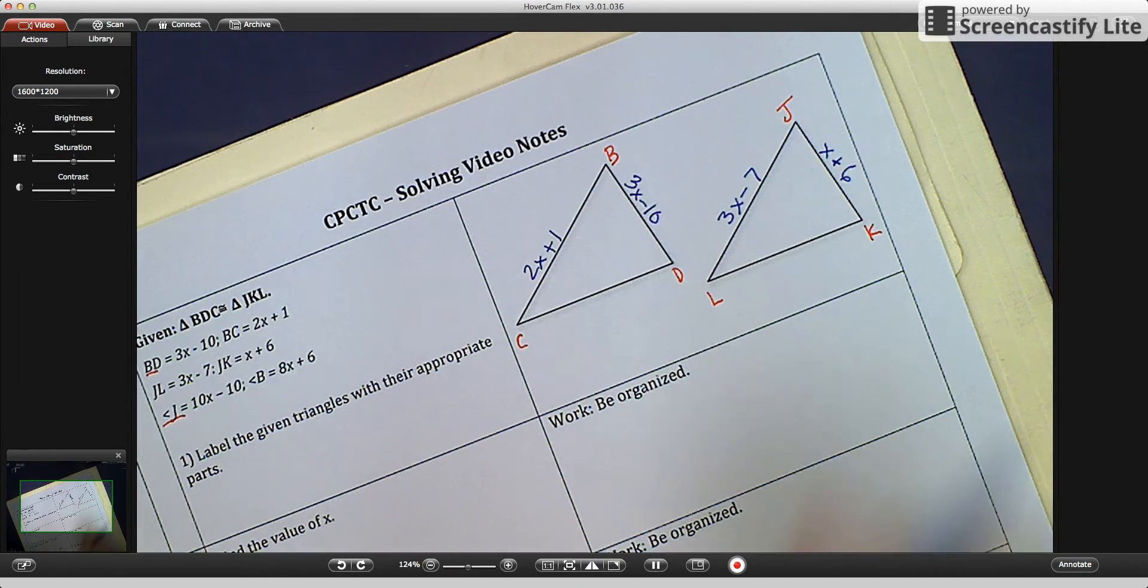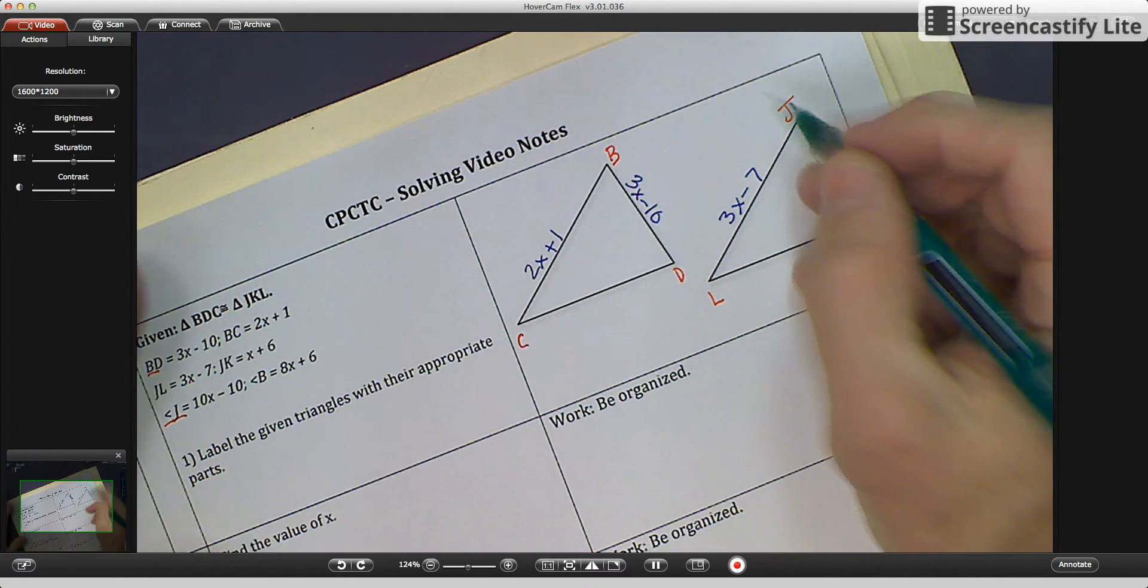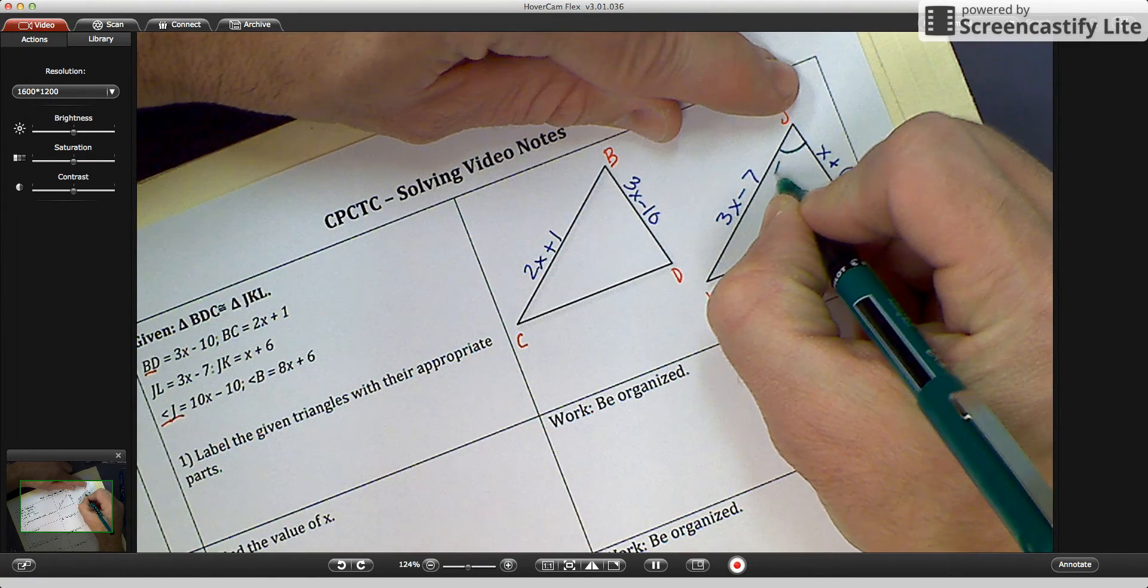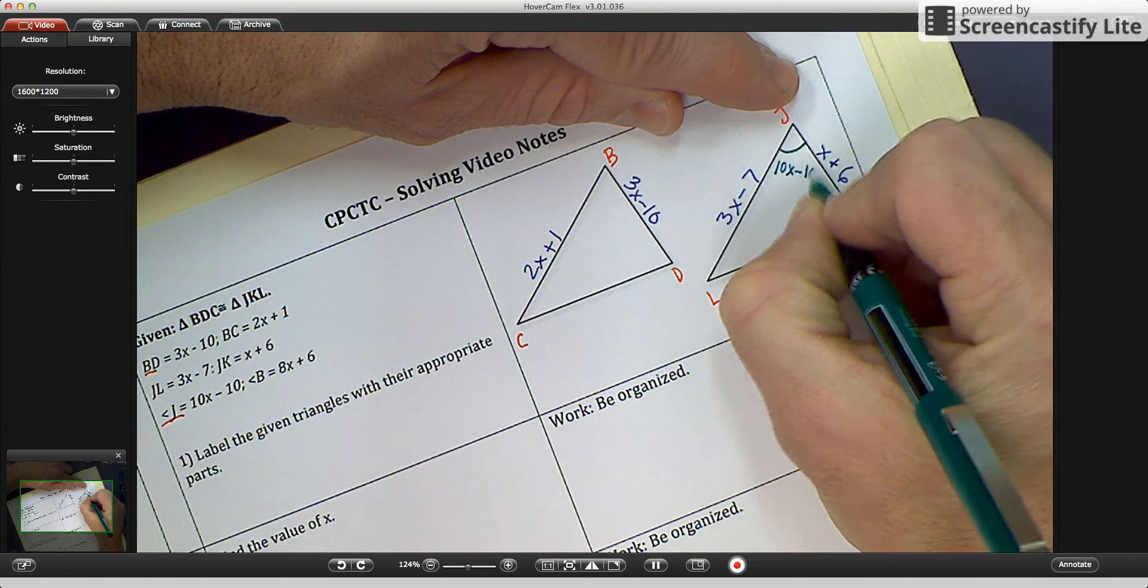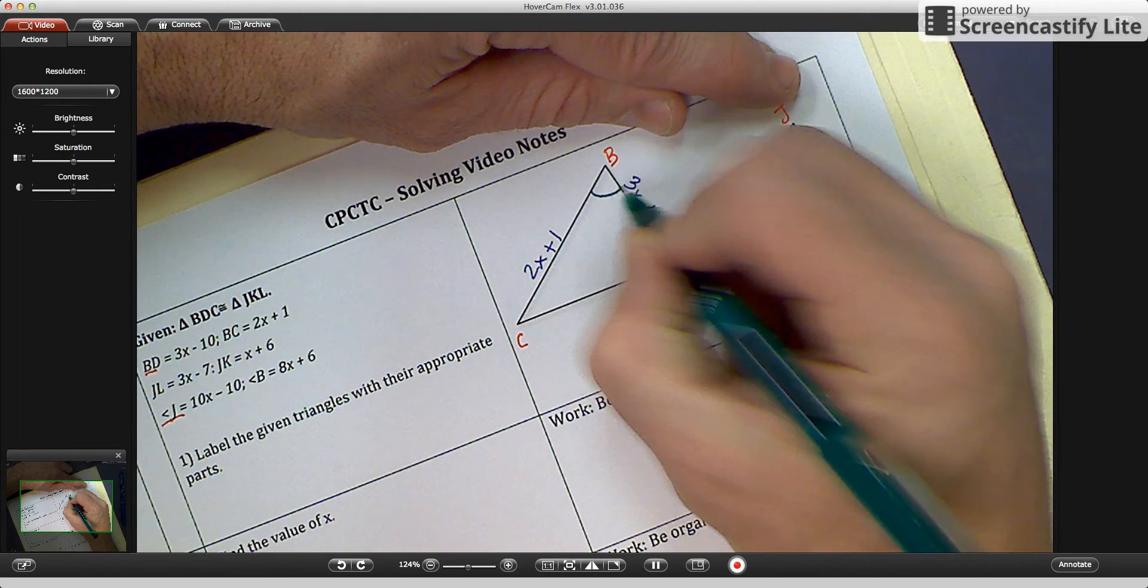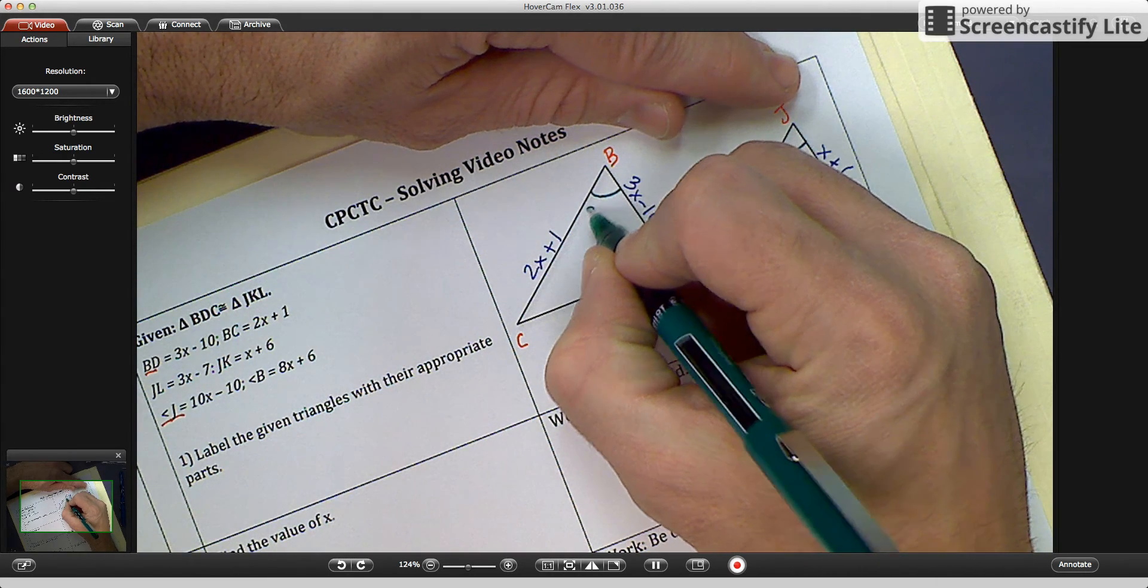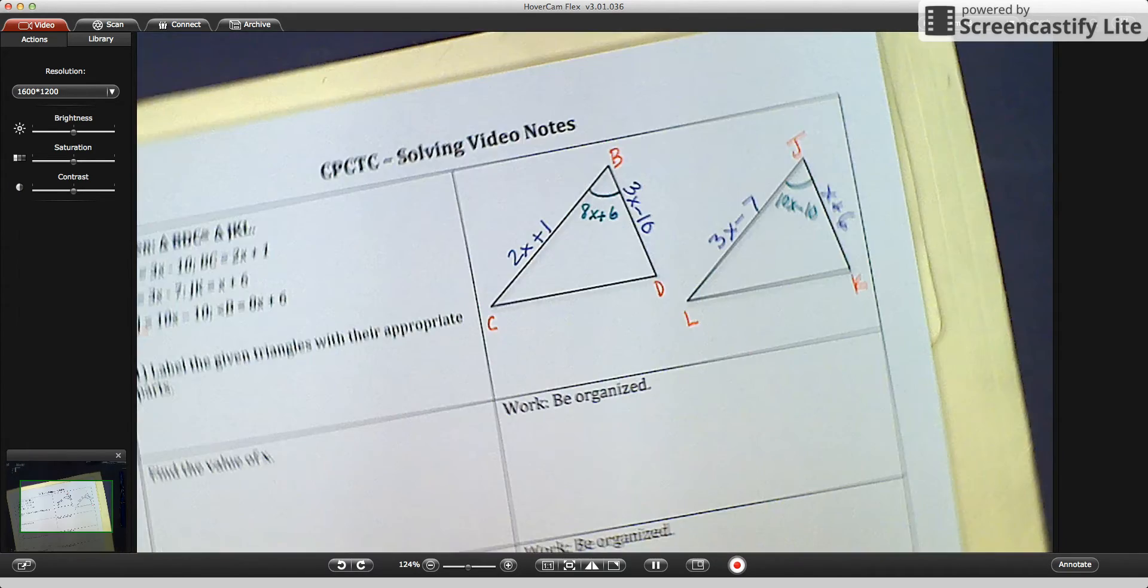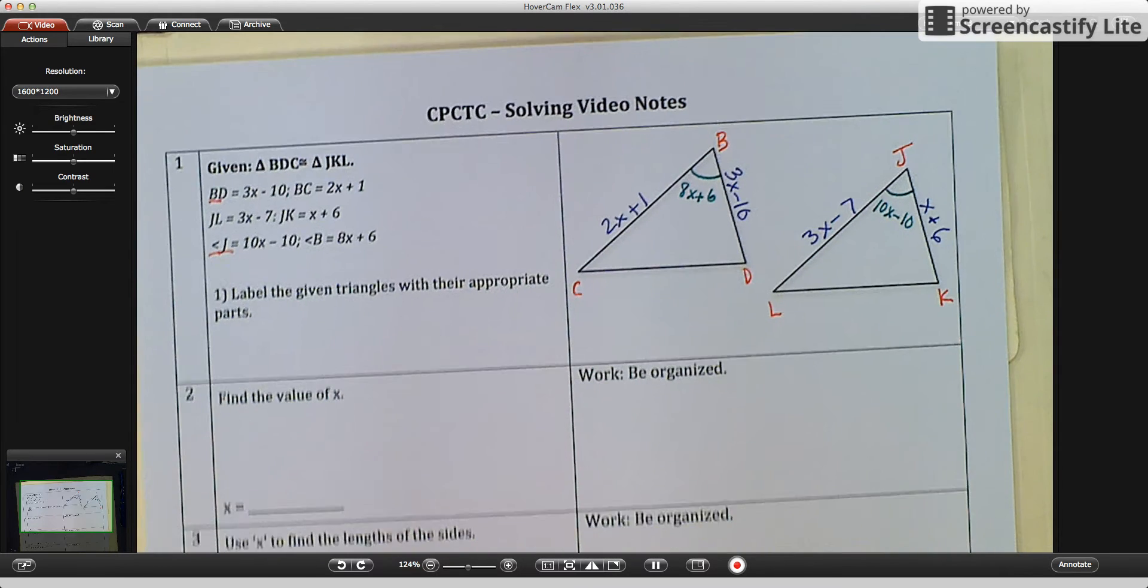The last thing we have, and I'm going to pick a different color, is we have angle J. So angle J right here, 10X minus 10. And we have angle B right here as 8X plus 6. So we have properly labeled the two triangles.